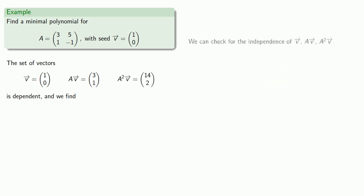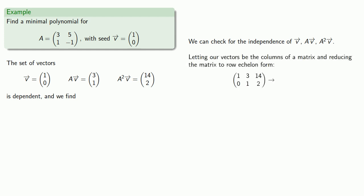And now we check for the independence of the set of vectors V, AV, and A squared V. So, again, letting our vectors be the columns of a matrix and reducing the matrix to row echelon form gives us... Again, not a lot of excitement here. But we do see that x_3 is T is our free variable.